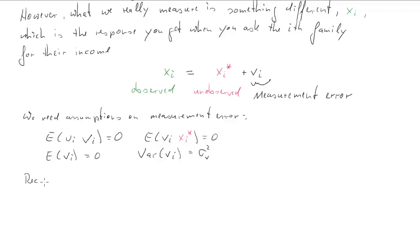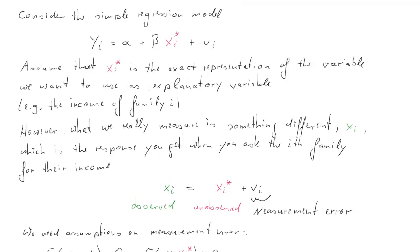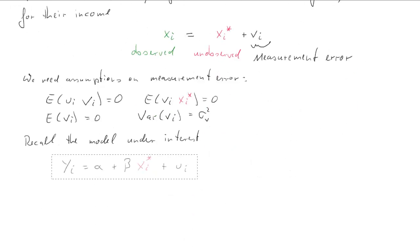So with these assumptions under our belt we can look back at our regression model. So this cannot be estimated because we actually do not have xi asterisk, so we cannot estimate this.